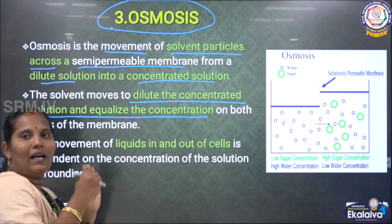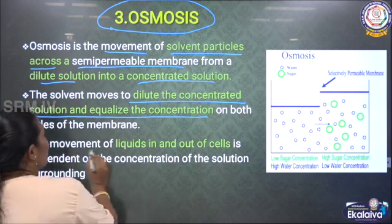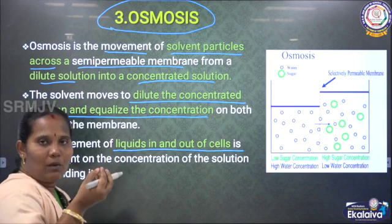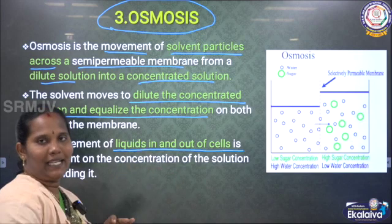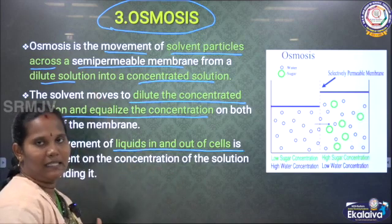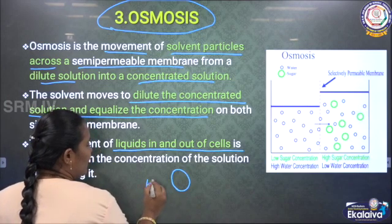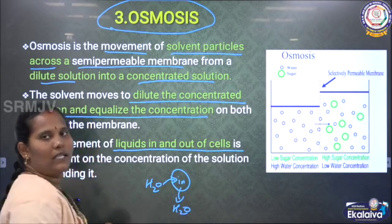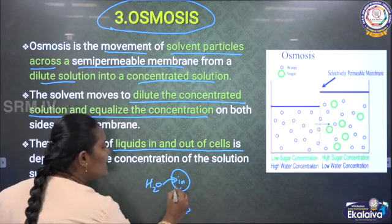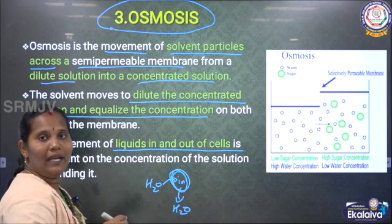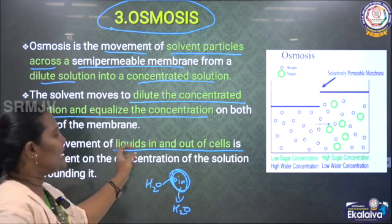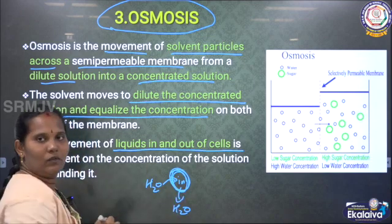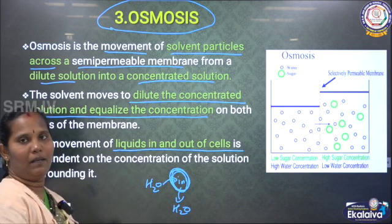How is osmosis relevant in our human body? We can say it is the movement of liquids in and out of the cells. The liquid balance — the movement of liquids inside and outside — is the osmosis process. If it is the cell, it is the water content. This water moves inside as well as outside, through the cell membrane. The cell membrane works like a semi-permeable membrane.